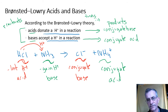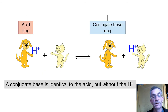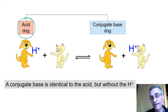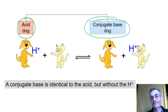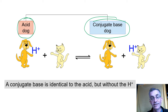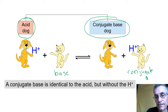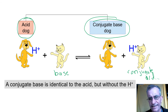Let me show you a little analogy. Think of a reaction between a dog and a cat. The dog is the acid — when it has that hydrogen it's the acid, and when it gives up that hydrogen it becomes the conjugate base. The cat is taking that hydrogen so it's the base, and when it gains that hydrogen it becomes the conjugate acid.